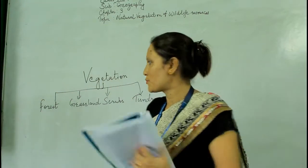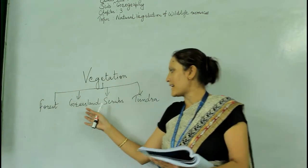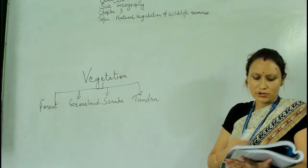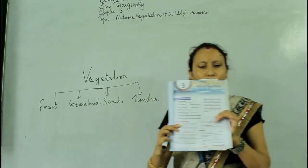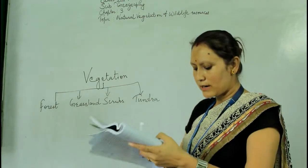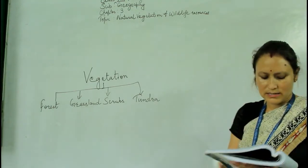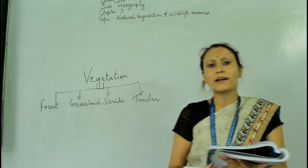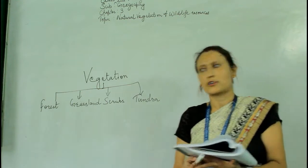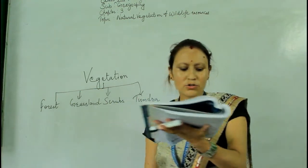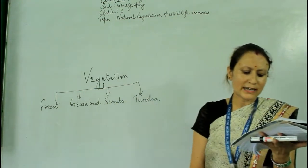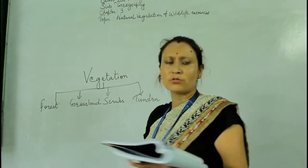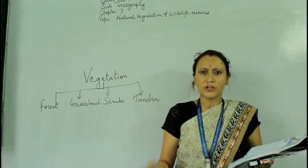So vegetations are grouped under four heads: forest, grassland, crops, and tundra. Forest — these are present in areas where there is very heavy rainfall. We know that there are different types of forests, which we will discuss later in the same chapter.